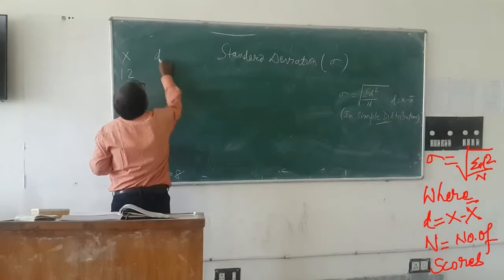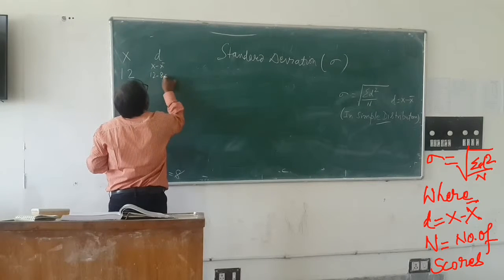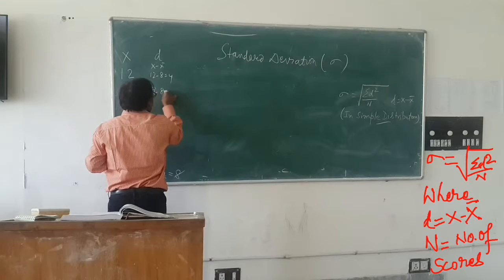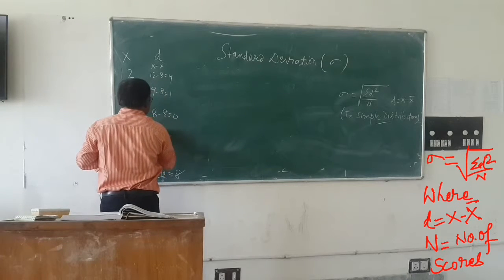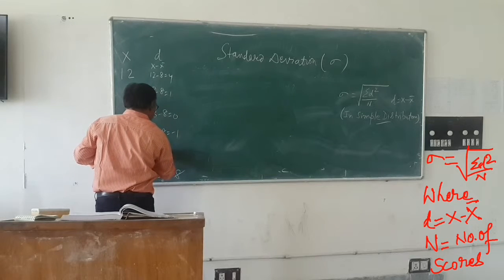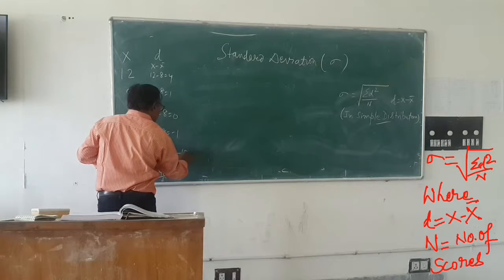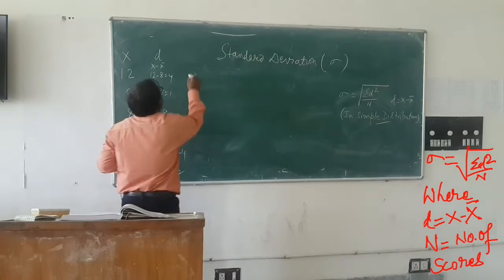So we will find the d as x minus x bar. So 12 minus 8 is equal to 4, 9 minus 8 is equal to 1, 8 minus 8 is equal to 0, 7 minus 8 is equal to minus 1, and 4 minus 8 is equal to minus 4. Just see, the sum of these is 0. But we need to take d square.